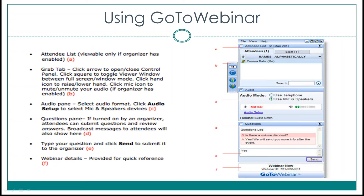I'm going to take a few minutes to explain how to use the GoToWebinar technology. I'm going to show you how to use some of the features that allow us to make our presentation more interactive. You should see the control panel pictured on your screen right now. If you don't, it's been minimized and you can pull it back out by going to the grab tab, which hides and shows the control panel. There's also an attendees list, which is A, where you can see all of the participants on the call.